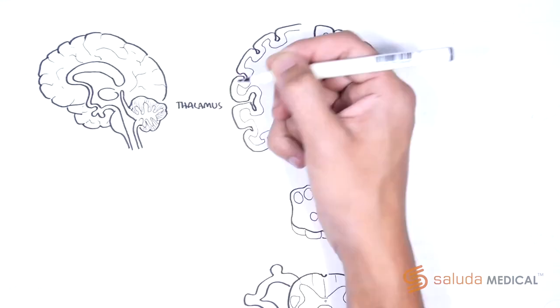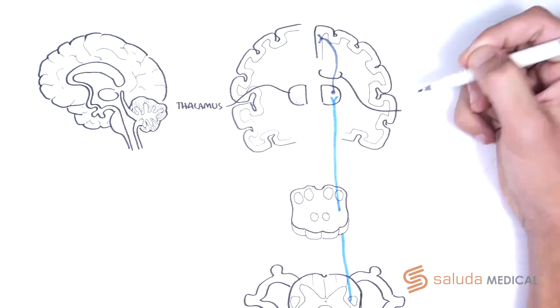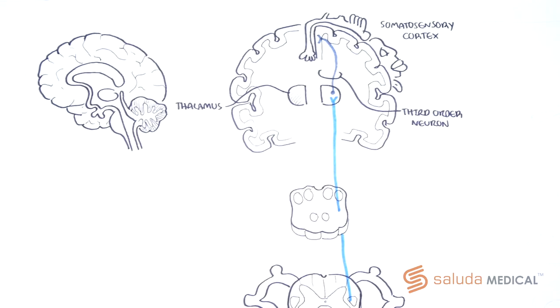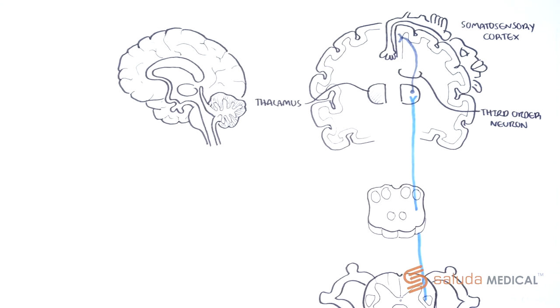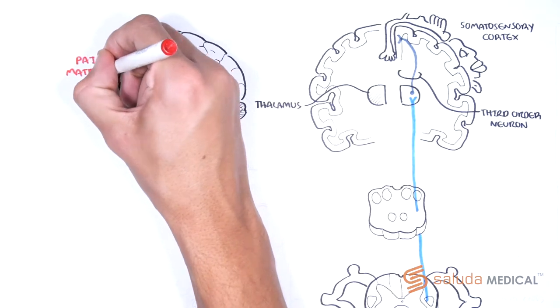In the thalamus, they in turn synapse with and activate third order neurons that finally convey signals to the somatosensory cortex, and actually quite a lot of different brain areas. The myriad signal paths and connections related to pain processing in the brain is termed the pain matrix.